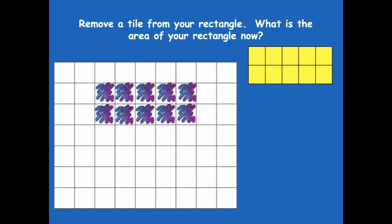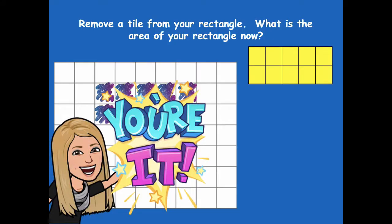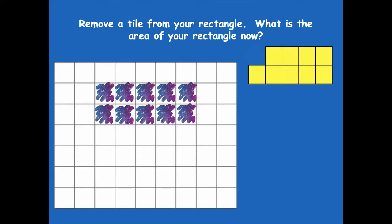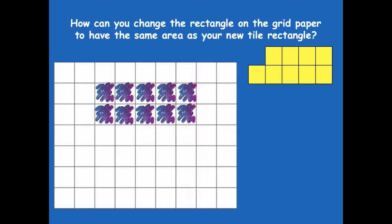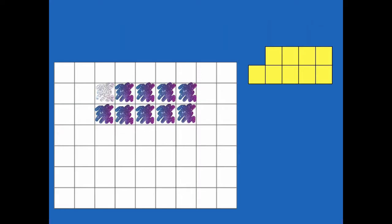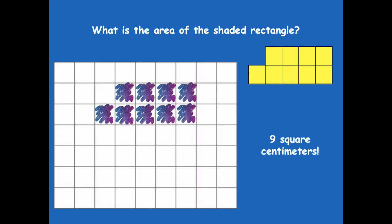If we remove a tile from your rectangle, what's the area now? Just have your rectangle with the tiles, not your shaded drawing — remove one tile and then find the area. Click play when you're ready to share. I'm going to remove one tile. What's our area now? Yeah, nine square centimeters! How can we change the rectangle on the grid paper to have the same area as your new tile rectangle? We can just take one away — now what's the area of our shaded rectangle? Yeah, it's still nine square centimeters.